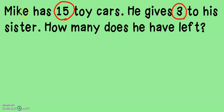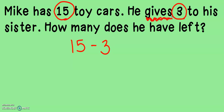First, it says Mike has 15 toy cars. So let's write down 15 for our first number in the number sentence. Now, it says he gives three to his sister. If he's giving them away, do you think we're going to add three or take away three? We are going to take away three because if he's giving them away, he's not getting more. He's going to have less.